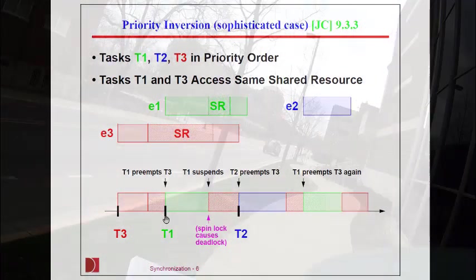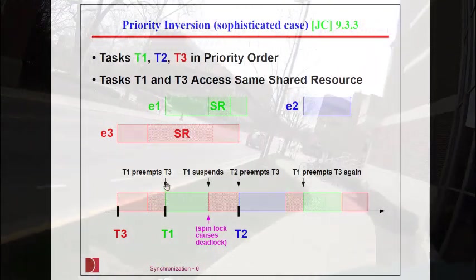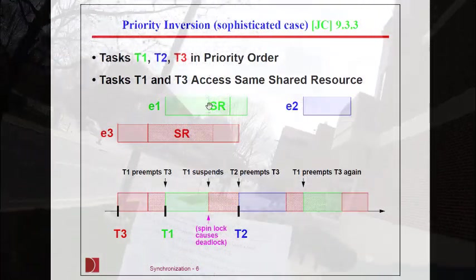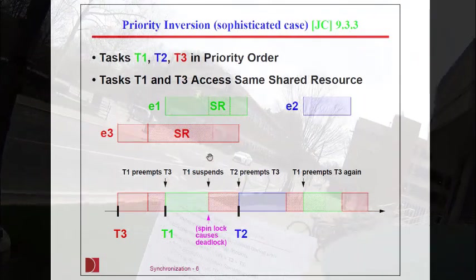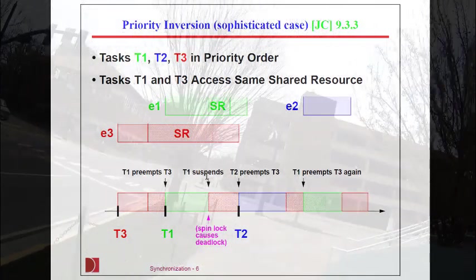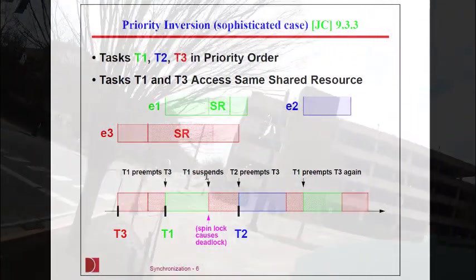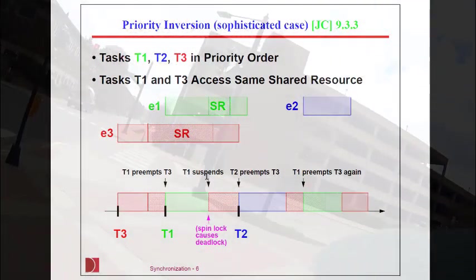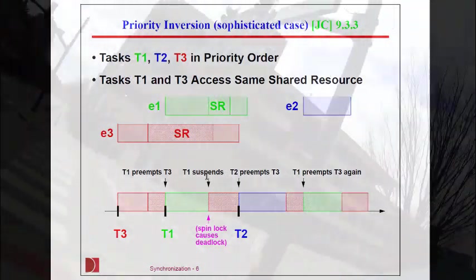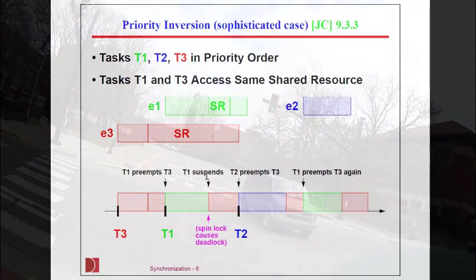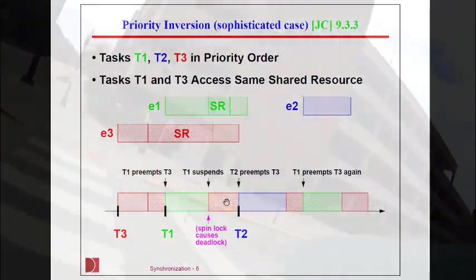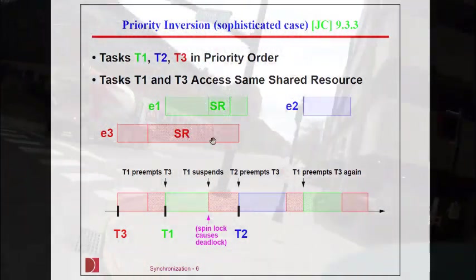But then task one starts. Task one runs for a while, but when it gets to this point here, it wants to use the shared resource. So task one does a wait. But wait says, hold on, that task is not available. I'm going to put you to sleep. So it does a suspend. Task one has gone to sleep because it has to wait for the shared resource to become available again. No problem. We're going to restart task three and let task three finish the use of the shared resource.